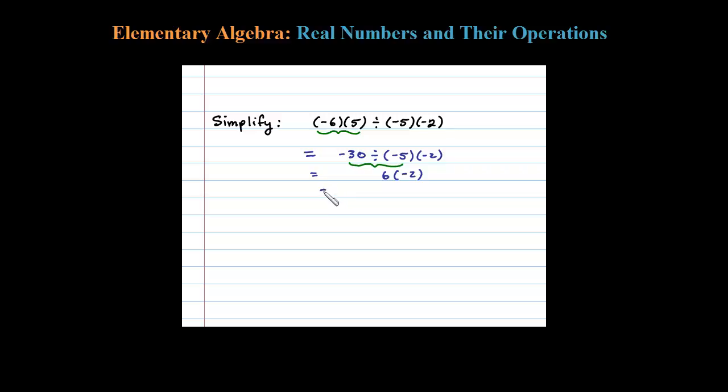And then for the last operation, when we multiply times 2, we're left with the final answer here, negative 12. Now let me show you the incorrect way to do this.